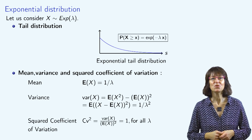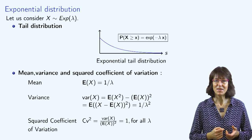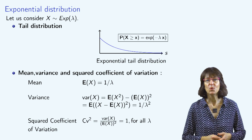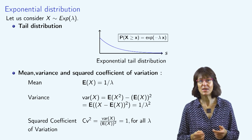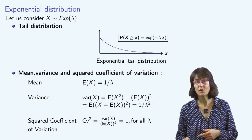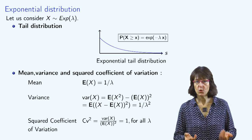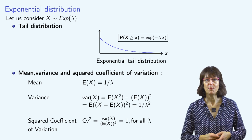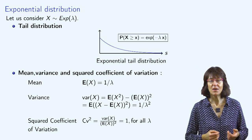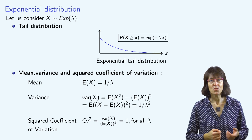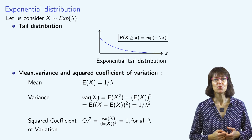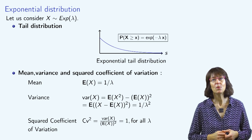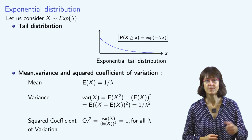The squared coefficient of variation of x is defined as the ratio of the variance of x to the square of its mean value. Note that, whatever the value of the parameter lambda, the squared coefficient of variation of an exponential random variable is equal to 1.